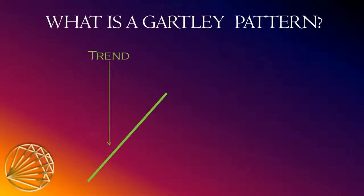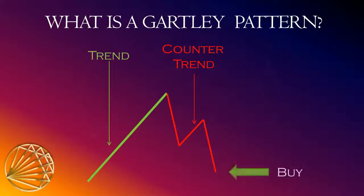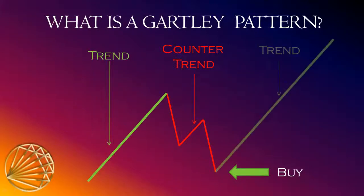Let's look at a simple bullish Gartley pattern. We first notice a trend move, and this is followed by a counter trend move. Notice the structure of the counter trend move — we looked at corrective structures like this in the previous section when we discussed price extensions. Once the counter trend move is complete, the assumption is that the trend will reassert itself. So we would buy here, and if you're right and the trend does reassert itself, there should be a significant move up.